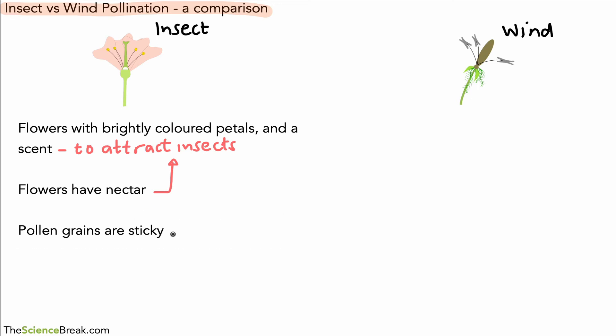The pollen grains that are produced by insect pollinated plants are sticky, so they stick to the body of the insect that visits them.